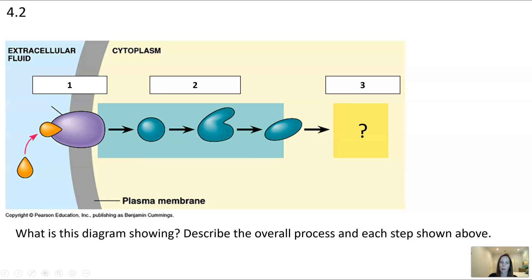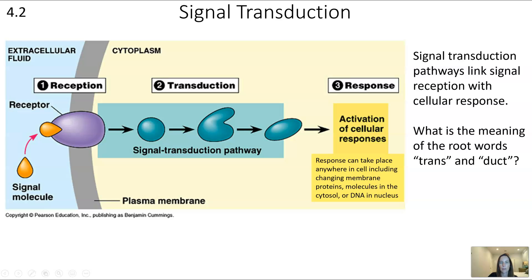Here we have a diagram with not a lot shown in terms of labels. See if you can figure any of this out. What is this diagram showing? Focus on the overall process but also see if you can name each step shown above. This overall process is called signal transduction, and there are three main steps: reception, transduction, and response.